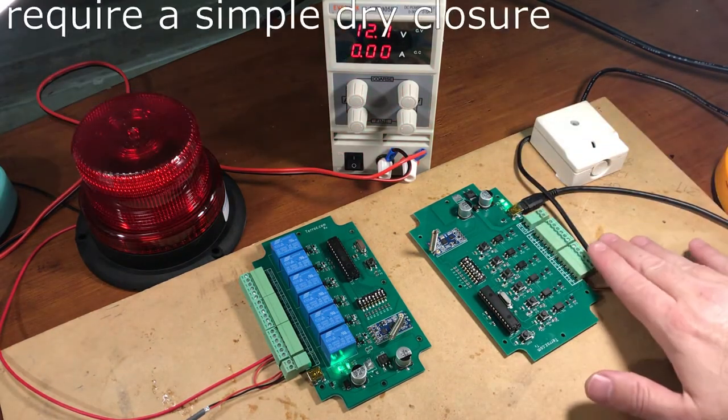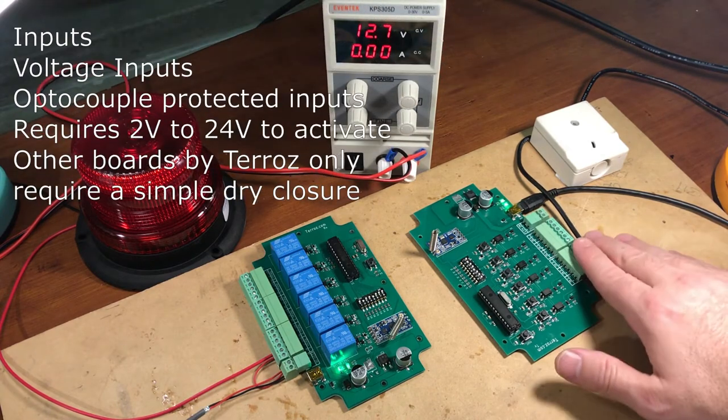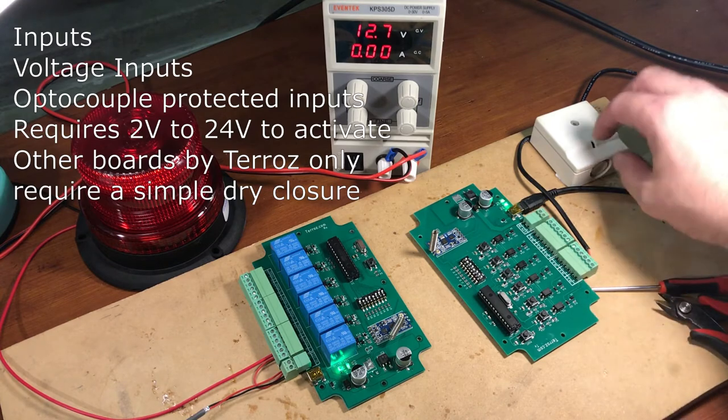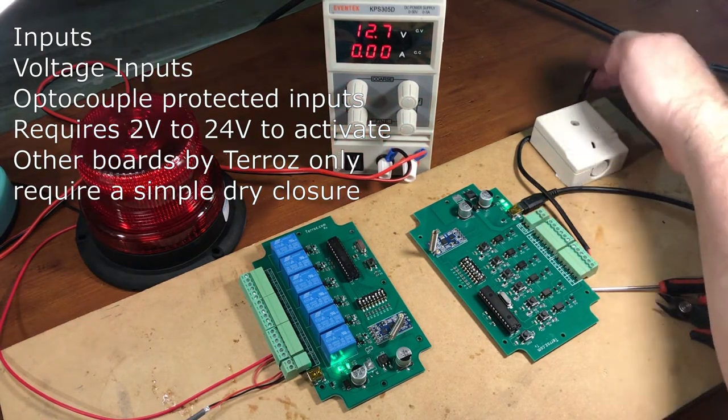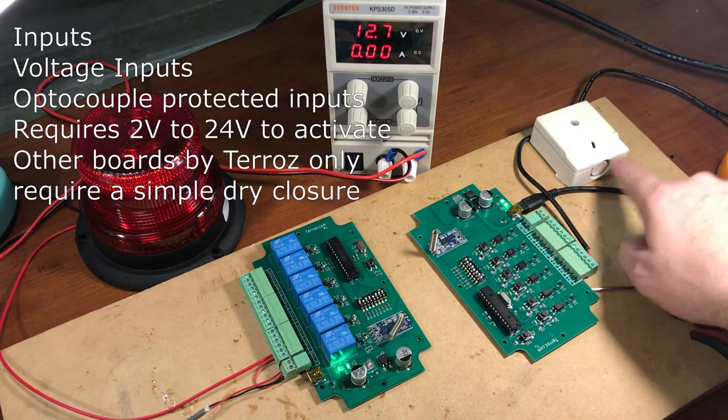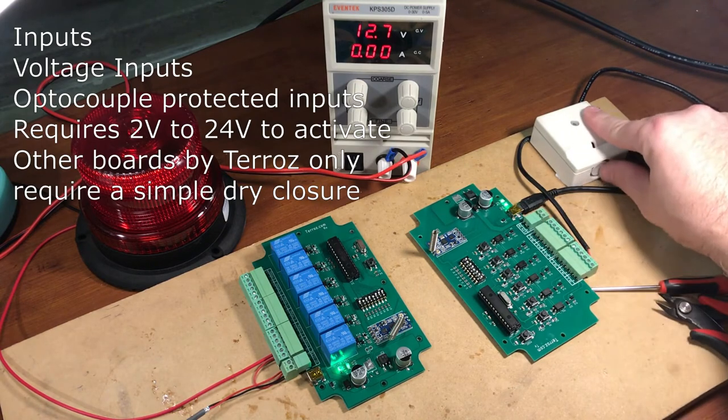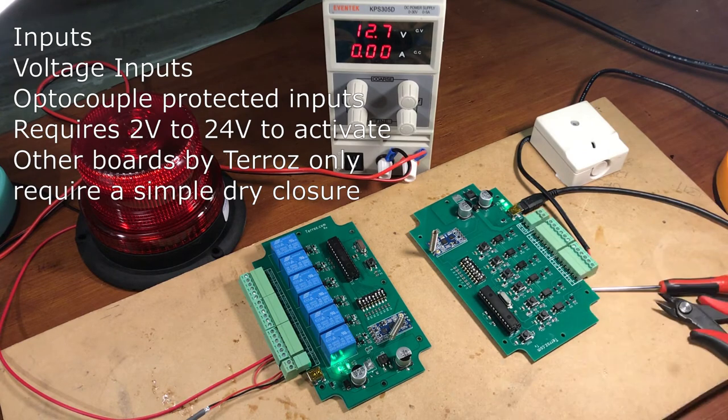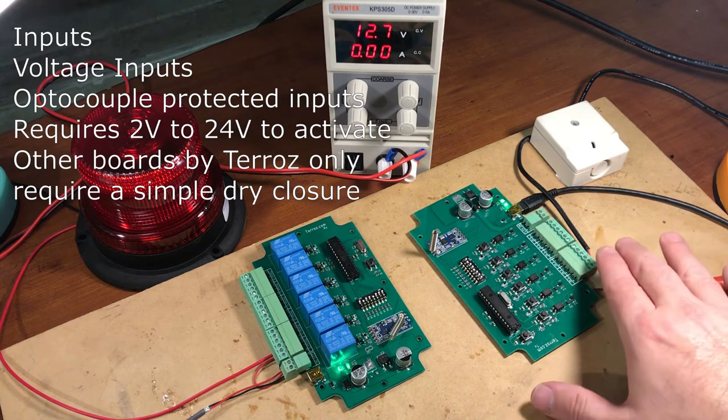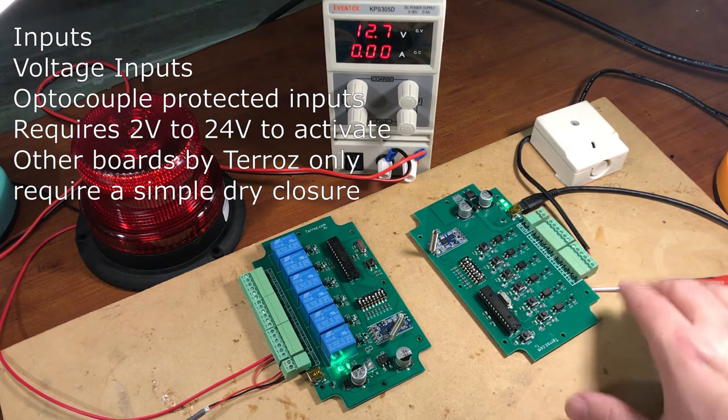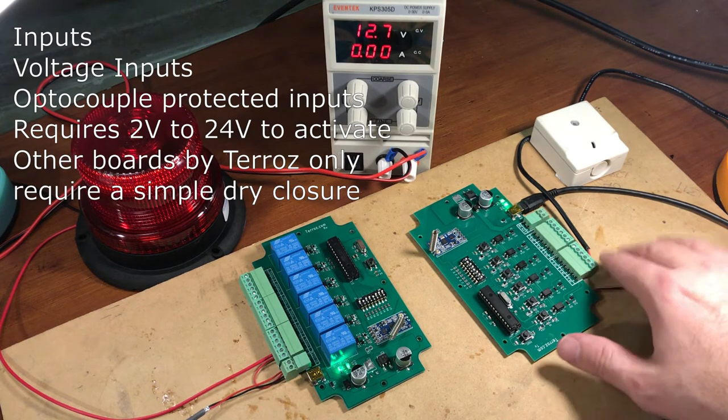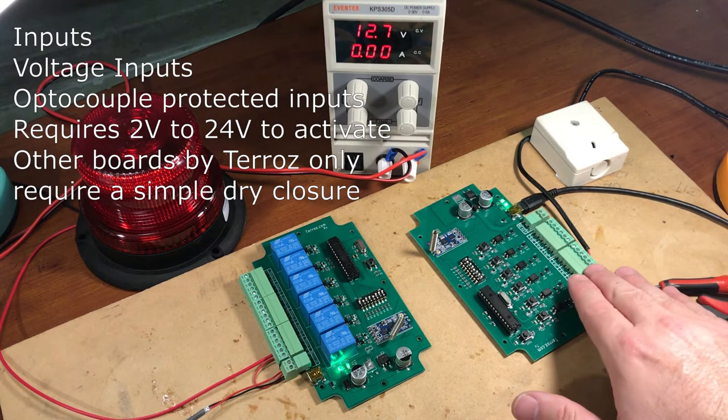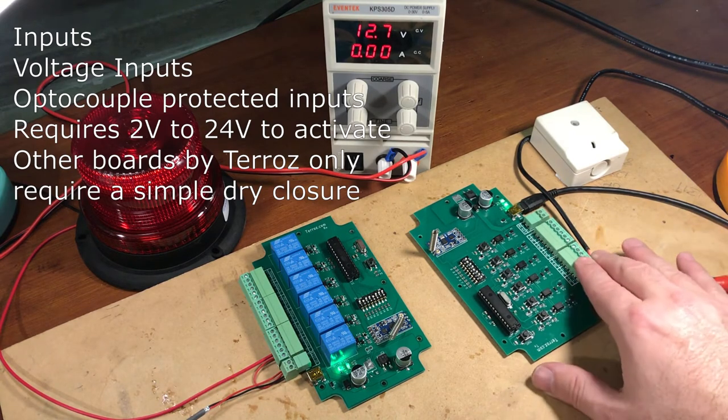Now the inputs on this particular board require voltage, so this isn't a dry button, this is actually a button that's pulling voltage from a power source over there. So again, these inputs can trigger as low as all the way down to 2 volts and all the way up to 24 volts. Don't exceed 24 volts, so you don't want to try to measure a 120 volt system here.